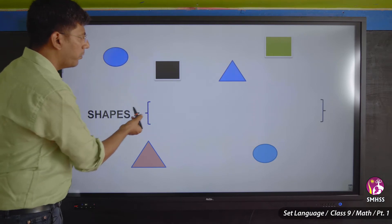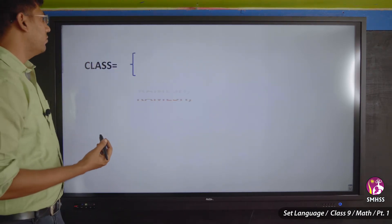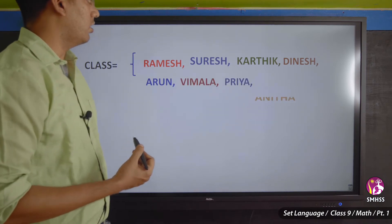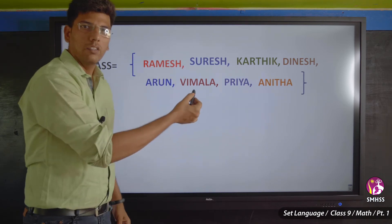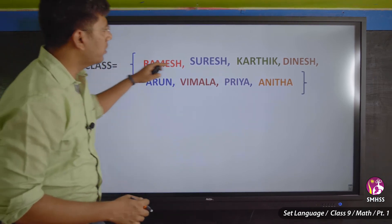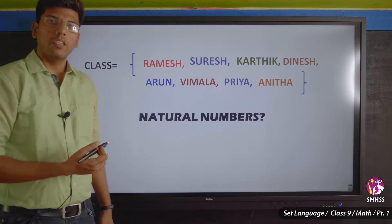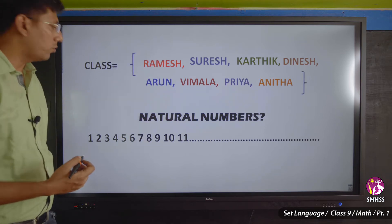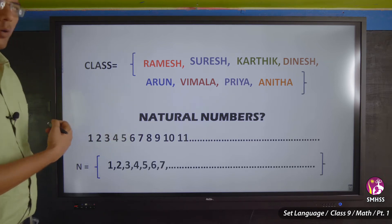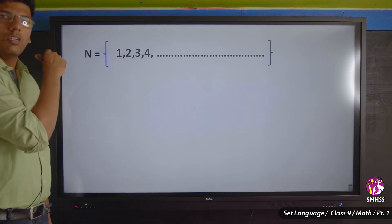A set can be written as: the name of the set equals open brace, elements of the set, close brace. For example, a class with students Ramesh, Suresh, Karthik, Dinesh, Arun, Vimala, Priya, and Anita is a set. Natural numbers are also a set: N = {1, 2, 3, 4, ... up to infinity}.